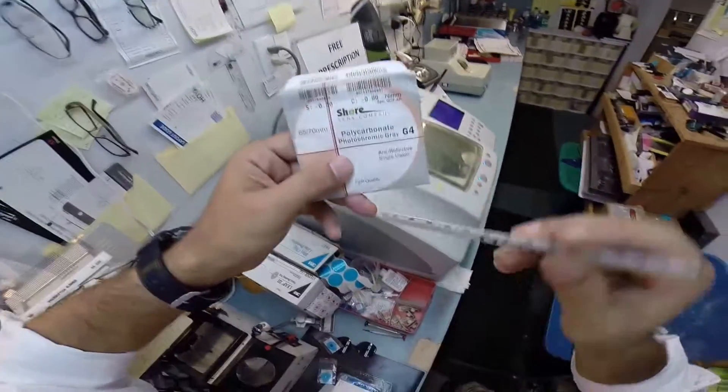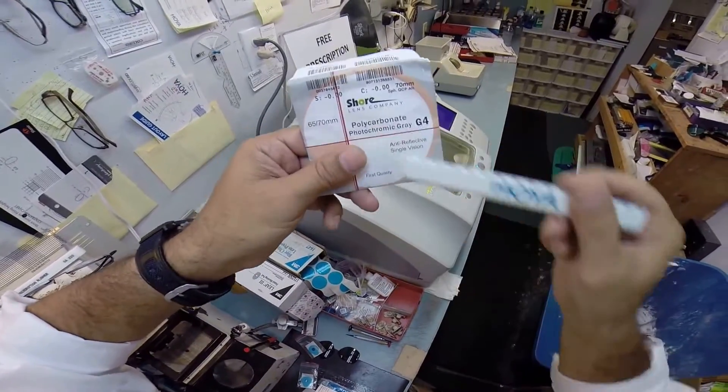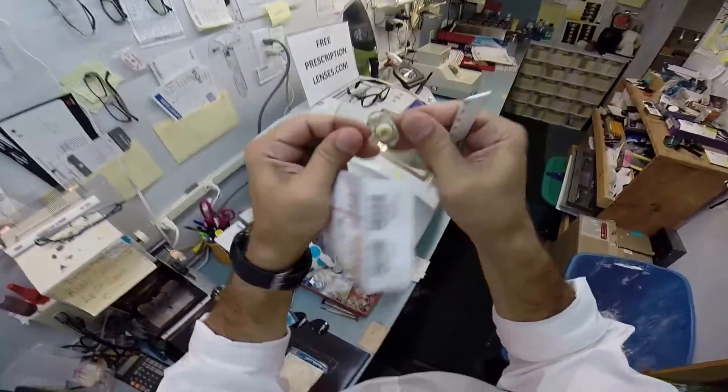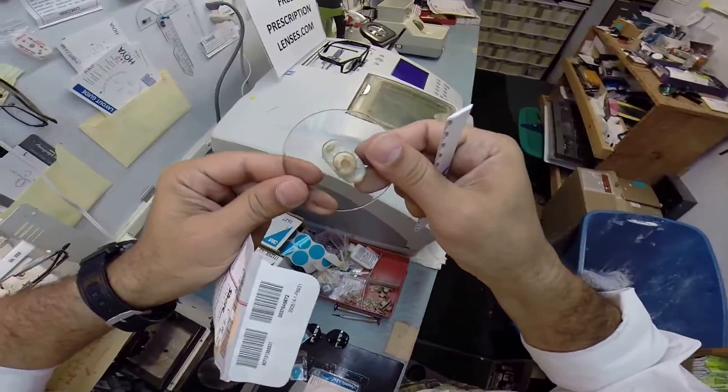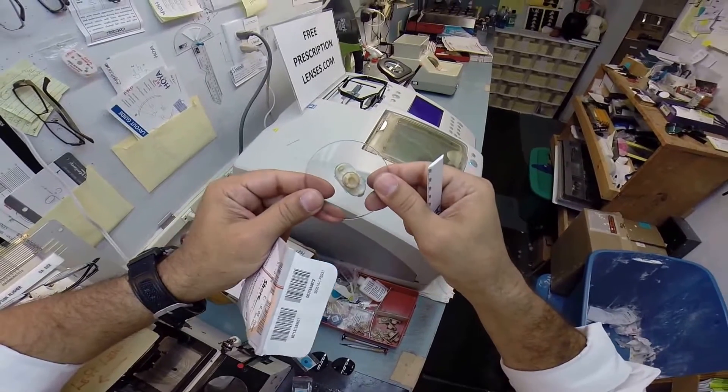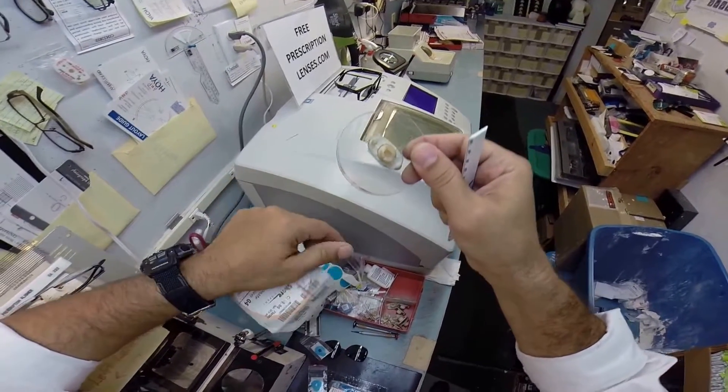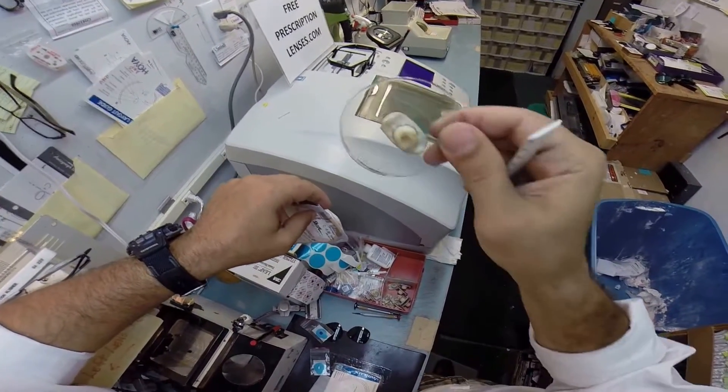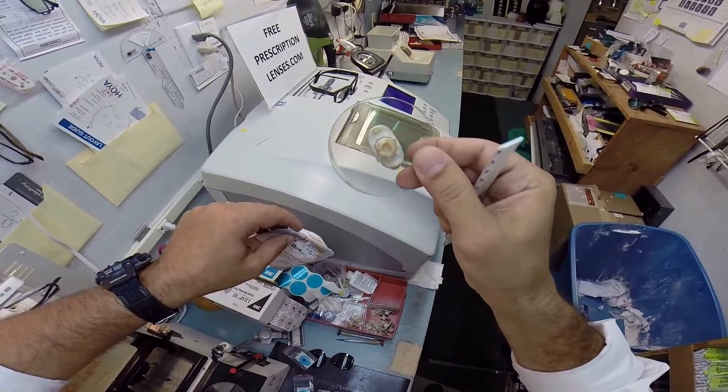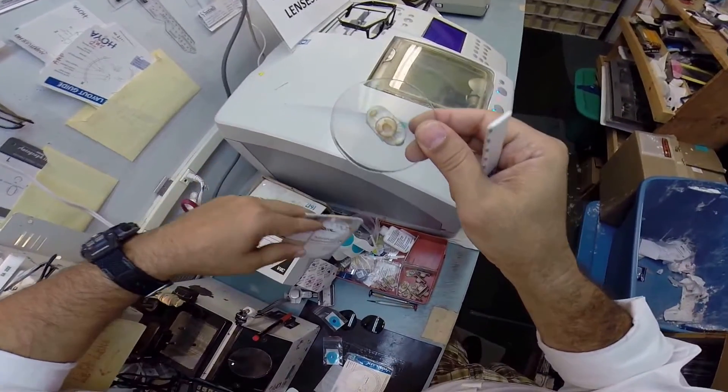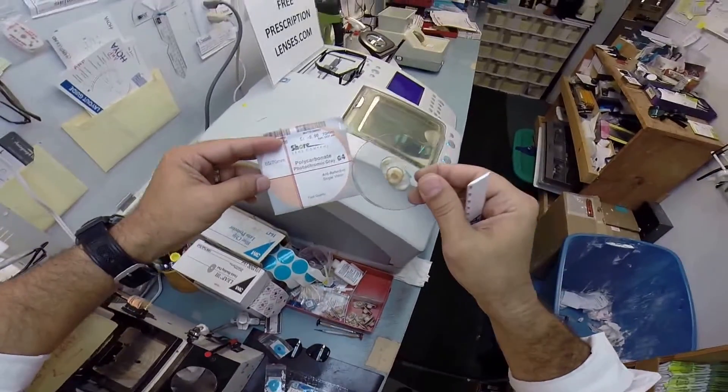Your lenses are made out of polycarbonate. Polycarb is 40% thinner and lighter than regular plastic. It is virtually unbreakable, which is going to be very important while you're riding your motorcycle. It's also bulletproof up to 22 caliber.